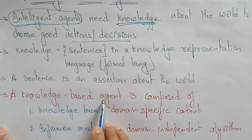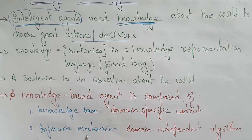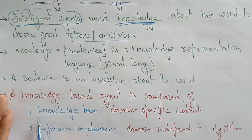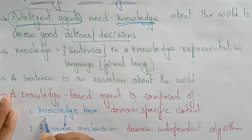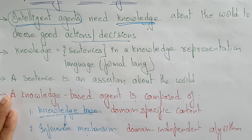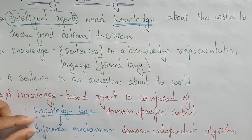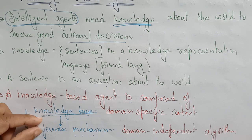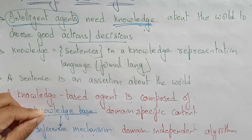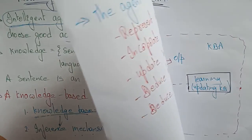A knowledge-based agent is composed of two parts: the knowledge base and the inference mechanism. Inference is deriving a new sentence from the old — with the help of old sentences you derive new ones. The knowledge base is the domain-specific content, whereas the inference mechanism is the domain-independent algorithm.